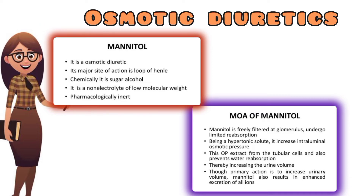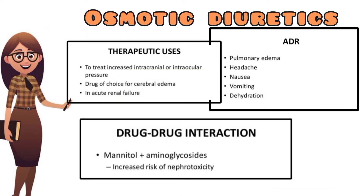Mannitol increases urine volume. It enhances the excretion of all ions. For therapeutic uses of osmotic diuretics: mannitol is used to treat increased intracranial or intraocular pressure. It is used in glaucoma, where ocular pressure is elevated.